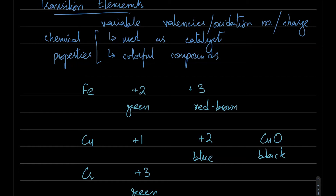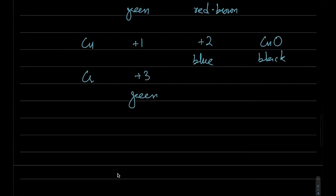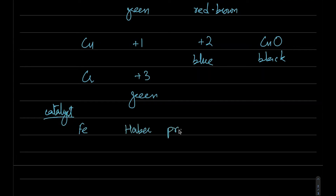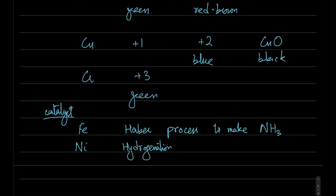For catalysts, you need to remember four main ones. Iron is used as a catalyst in the Haber process to make ammonia. Nickel is used in the hydrogenation process, which takes vegetable oil and converts it to margarine.